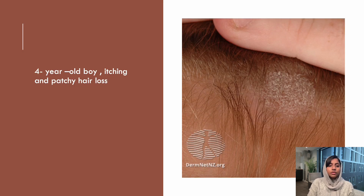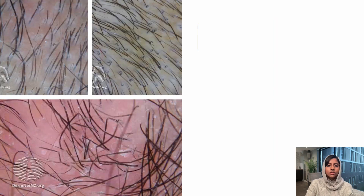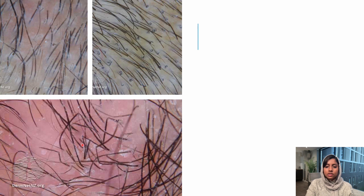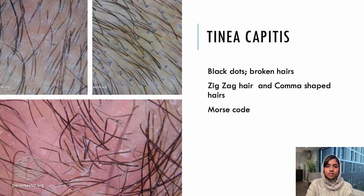The next scenario: a four-year-old boy is brought with complaints of itching and patchy hair loss. On trichoscopy, you can see comma-shaped hairs, broken hairs, some in a zigzag shape, and also barcode-like hairs. These are specific features for tinea capitis.